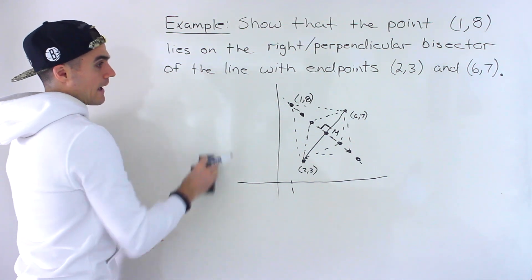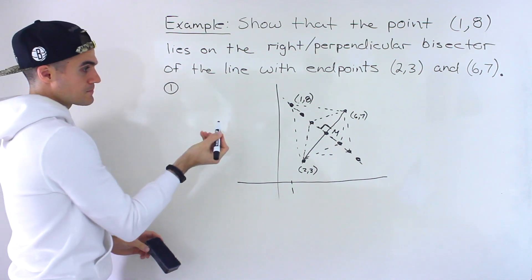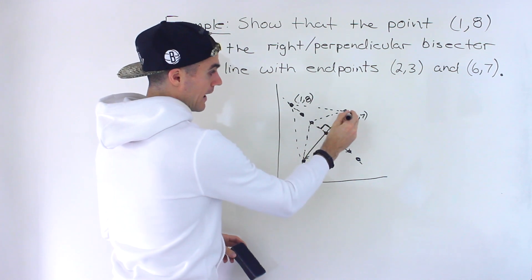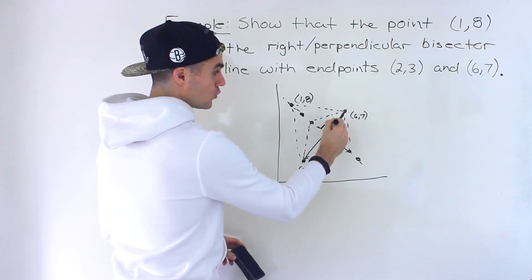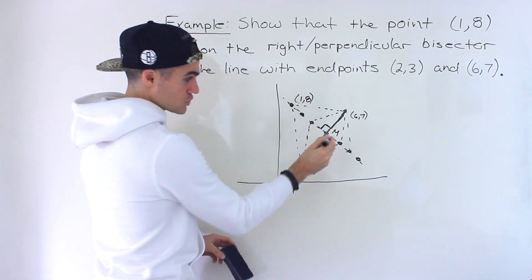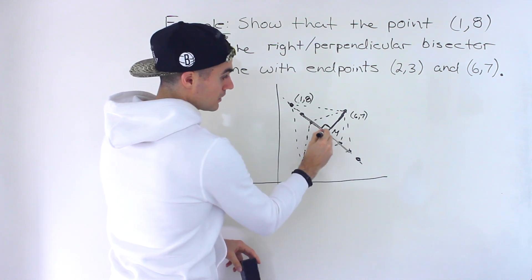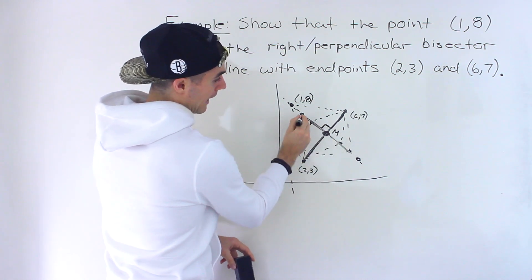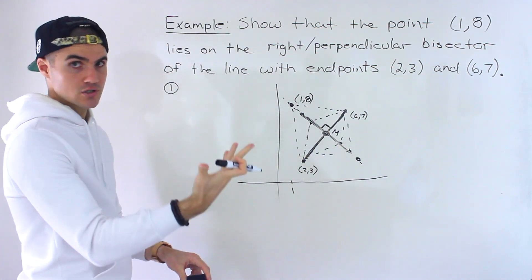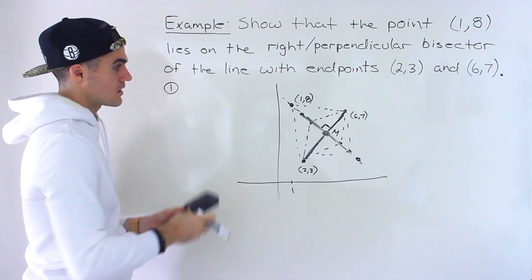Starting with the first way — what are the steps to finding the equation of the perpendicular bisector? We have to find the slope of this line, then find the perpendicular slope, which is the negative reciprocal, to get the slope of the bisector. Then we find the midpoint. With the slope and a point on the line, we can find the equation, and then confirm that the point (1, 8) is on it.